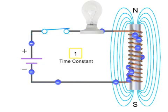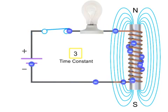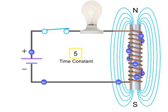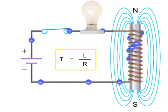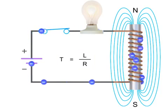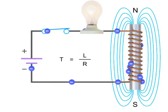The current will continue to flow and reach its maximum value after 5 time constants, or 5T, where T is equal to L divided by R. The light bulb will then be at its maximum brightness.